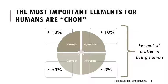So 18% of you is carbon, 10% of you is hydrogen, 65% of you is oxygen, and 3% of you is nitrogen. Those C's, H's, and O's are going to be very important for the biological molecules we'll talk about later today.